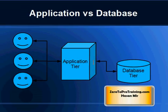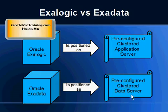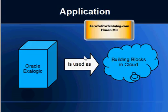The ExoLogic appliance goes in this middle tier. Here is a quick comparison: Oracle ExoLogic is positioned as a pre-configured clustered application server, while ExaData is positioned as a pre-configured clustered database server. Clustered is the key term here. So why would one buy Oracle ExoLogic?